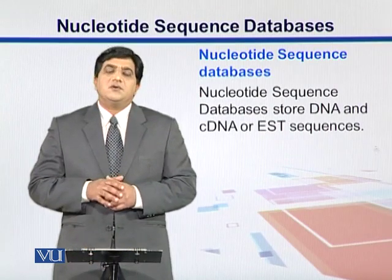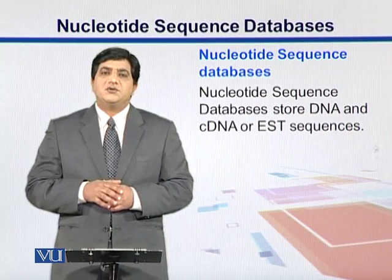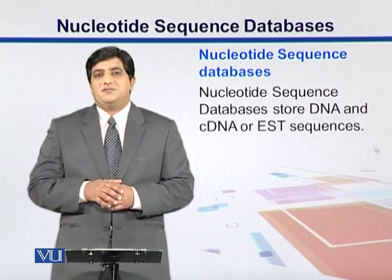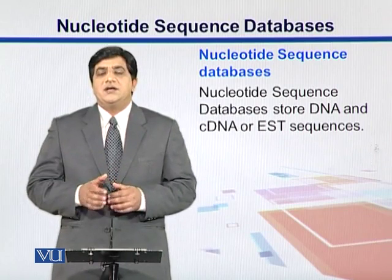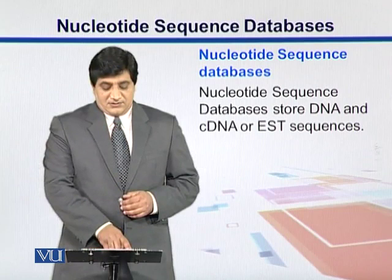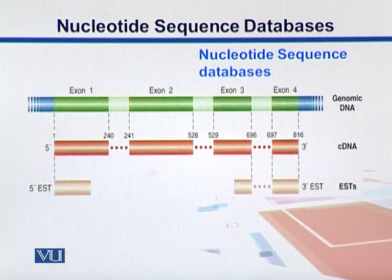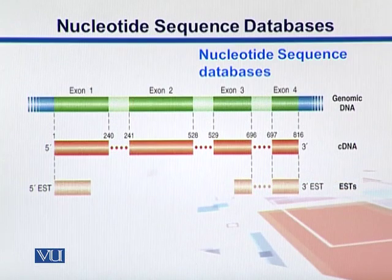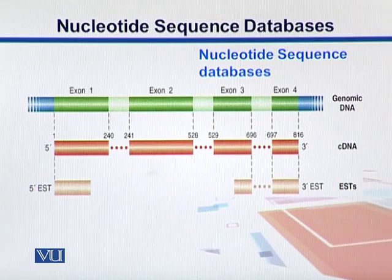Nucleotide sequence databases are the types of biological databases which store nucleotide sequence data, which can be cDNA, EST, or DNA. Here we have the diagram where we have a genomic DNA. In eukaryotes we have exons and introns. Exons get transcribed into messenger RNA, and we can get cDNA from that messenger RNA through reverse transcription, which is then stored in our databases.